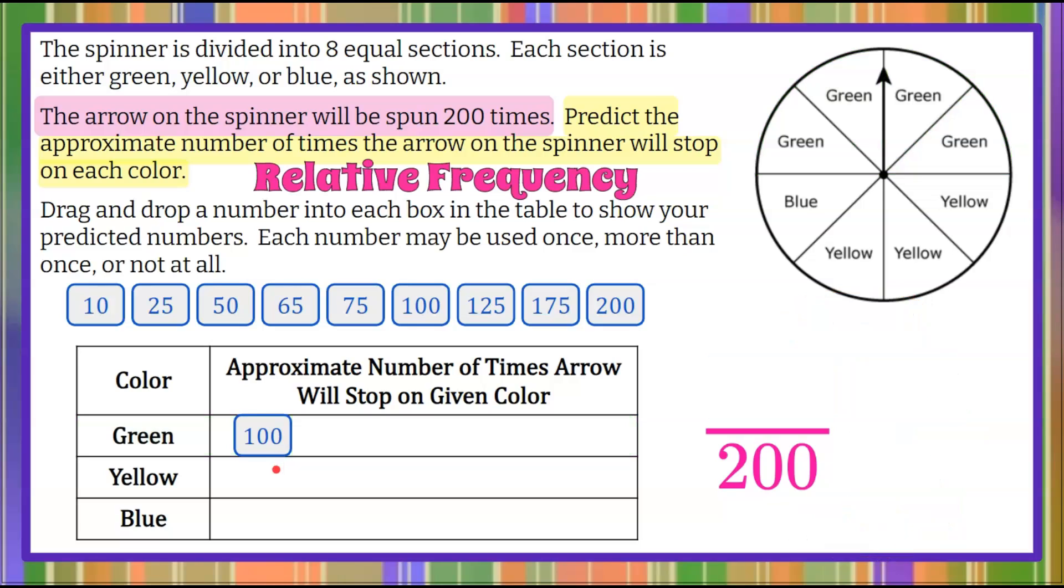Now let's move on and do yellow. Clear our workspace. Out of our 200 times, we want to know our relative frequency for yellow. So let's find our probability of spinning yellow. When we look at our spinner, we can see that we have three sections that are yellow.